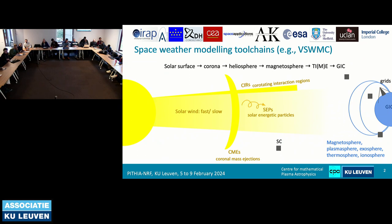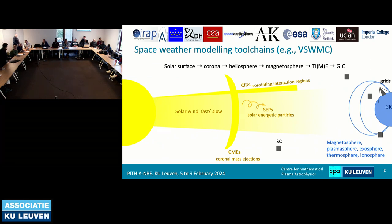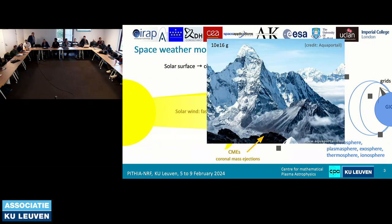One of these tool chains that you can also use — it's open access to everyone — is the Virtual Space Weather Modeling Center. It's not an easy acronym to say. We are actually lobbying to change it to VSpace, so it's a bit more new generation. But for now it's called the Virtual Space Weather Modeling Center. Stefan is in charge of it, so if you have more questions, always ask him.